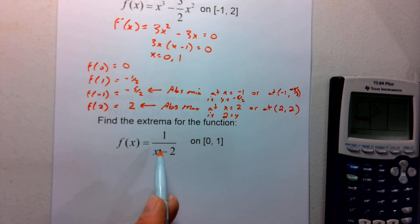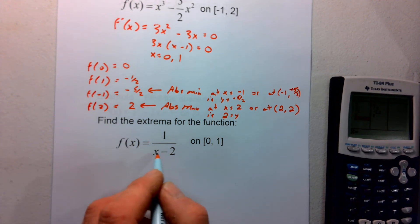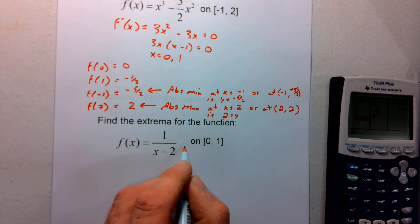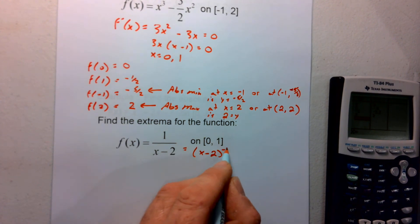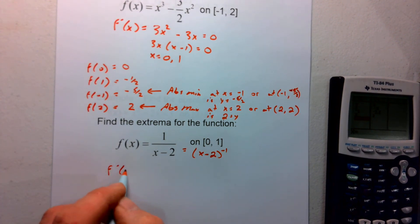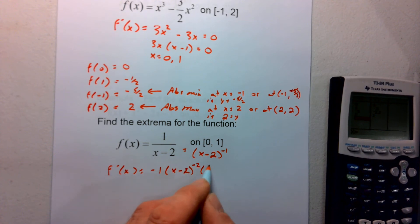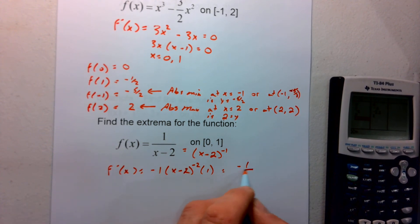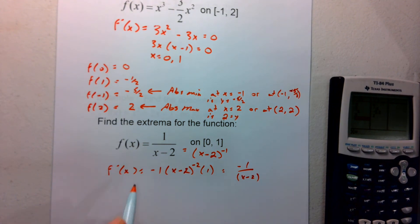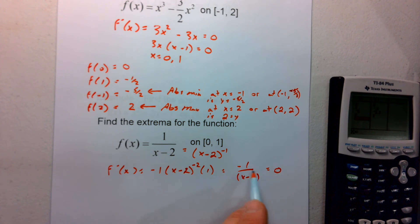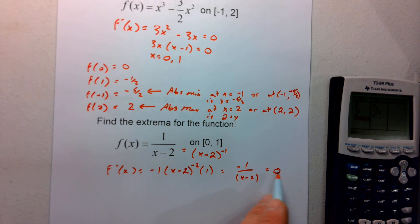Here we have a rational expression, so we find the derivative of that. I would bring the denominator to the numerator and do a chain rule — setting it equal to x minus 2 to the negative first. Using chain rule, the derivative is negative 1 times (x minus 2) to the negative second times 1, which simplifies to negative 1 over (x minus 2) squared. Setting that equal to zero: multiplying across gives me negative 1 equals 0, which doesn't make sense — there are no critical points.